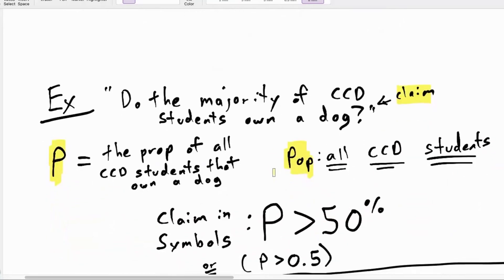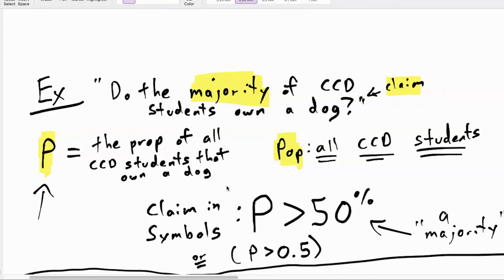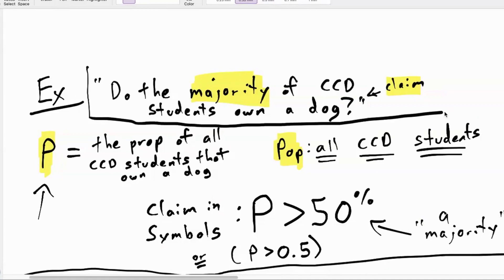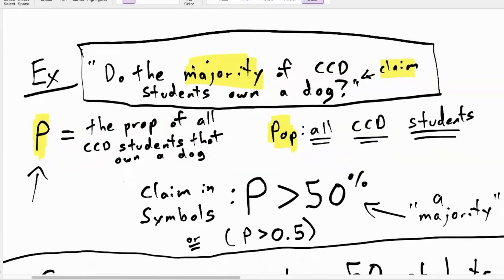We're going to be looking at evidence. One thing that we're going to do is think about what this means in symbols. Because we're talking about a majority, that's talking about: is the proportion of all the CCD students that own a dog more than 50%? Anything above 50% — when you say something has a majority, that's what you mean. You could say it's greater than 50%, or you could say P is greater than 0.5. Same thing, just like with a probability.